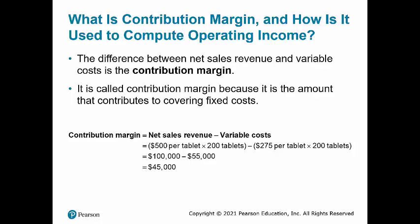We can often express contribution margin in total. Using Smart Touch Learning as an example, let's calculate total contribution margin. If Smart Touch Learning sold 200 tablets at $500 per tablet, net sales revenue would equal $100,000. If the variable cost per tablet was $275, we could calculate total variable cost by multiplying $275 per tablet times 200 tablets to get $55,000.